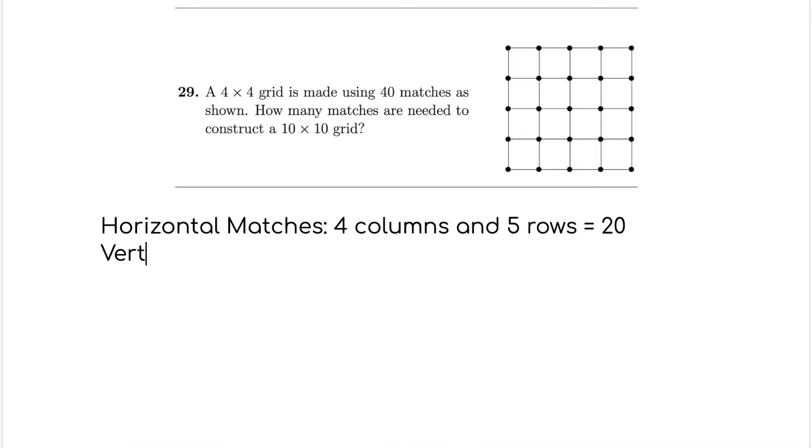So let's write that down. For horizontal matches, there are four columns and five rows. So that's 20. And then for vertical matches, it's nearly the same, except that this time we have five columns. So let's look at the vertical ones. That's one, two, three, four, five columns, and four rows. One, two, three, four. So five columns and four rows. And so that means that total is 40.